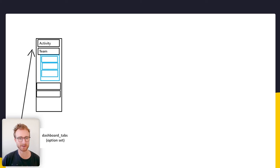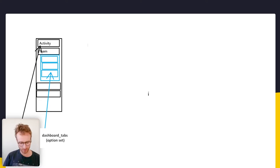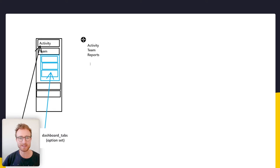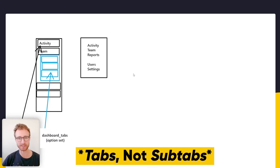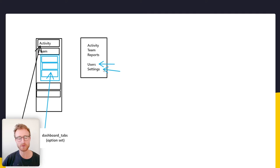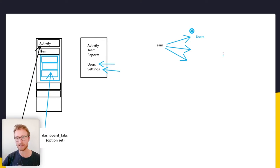If a different tab is clicked, we collapse the subtab group for the previously opened tab and show the subtabs for the new one. These are our tabs added from an option set, and we can also feed those tabs as subtabs. In our option set we've got activity, team, reports — and we might also have subtabs like 'users' or 'settings' under the team tab.